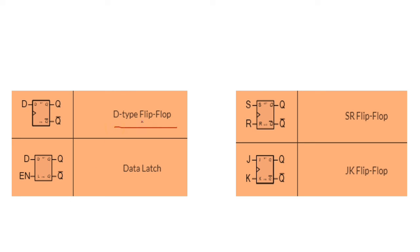We have the D-type flip-flop. The input is D, and we have two outputs: Q and Q-bar. If Q is zero, Q-bar will become one; if Q is one, Q-bar will become zero. For the data latch flip-flop, we have a D input and an enable signal. This flip-flop will not work if the enable signal is not present.